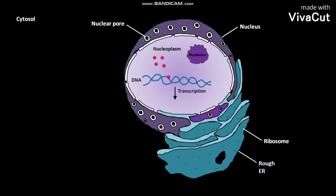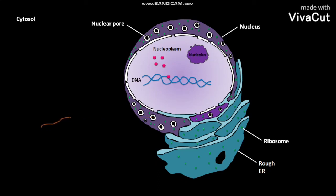This transcription produces an mRNA, which moves out of the nucleus through the nuclear pore and reaches the cytosol. In the cytosol, this mRNA undergoes translation to produce protein folding catalysts.